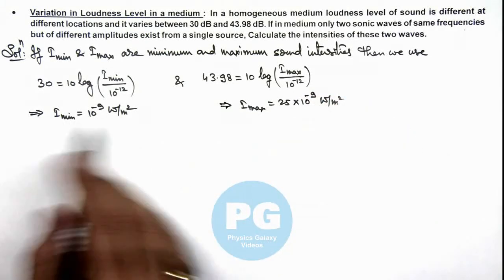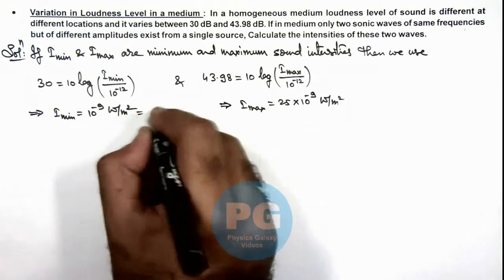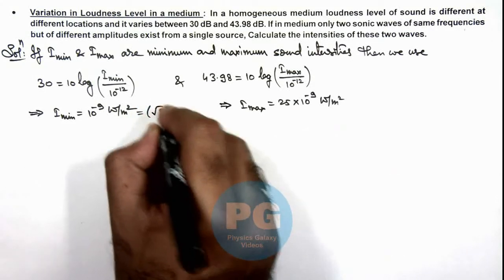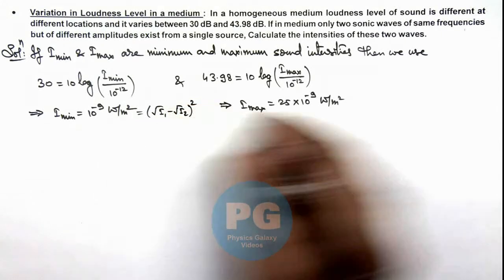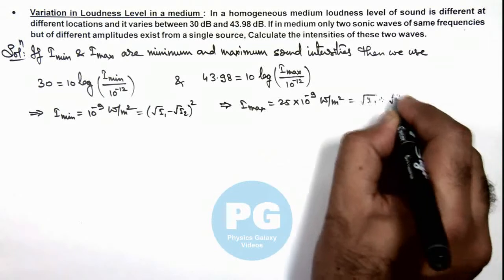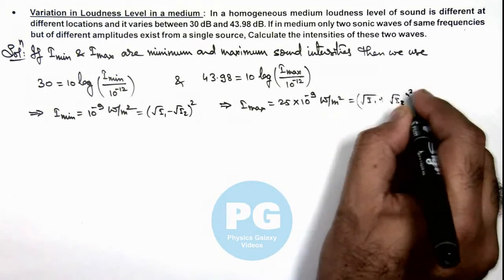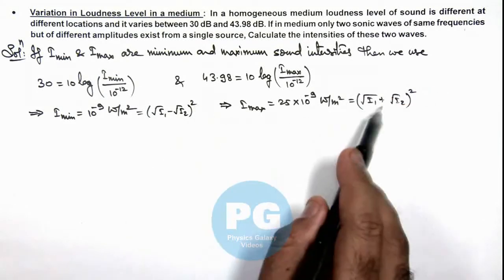And these values can be further equated to root I_1 minus root I_2 whole square and this as root I_1 plus root I_2 whole square. We know that maximum and minimum intensities are given by these expressions.